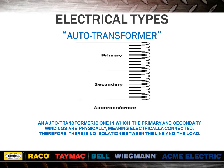An autotransformer is one in which the primary and secondary windings are physically — meaning electrically — connected. Therefore, there is no isolation between the line and the load. Autotransformers are more economical than comparable isolation units. Autotransformers should only be used where isolation of the load is not required; the most common application is for single-phase and three-phase standard AC motors. Units manufactured as autotransformers must have the word 'auto' on the nameplate.